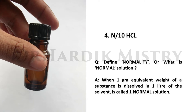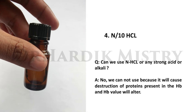Here N means normality. Normality is defined as: when one gram equivalent weight of a substance is dissolved in one liter of solvent, it is called a one normal solution. Can we use normal HCl or any strong acid or alkali? No, we cannot, because it will cause destruction of proteins present in the hemoglobin and the hemoglobin value will alter.